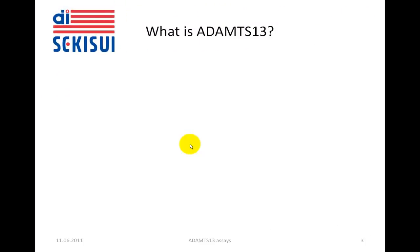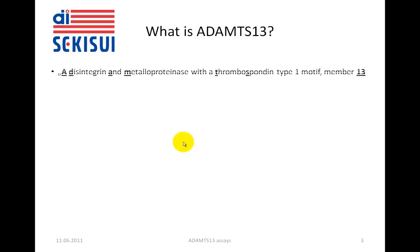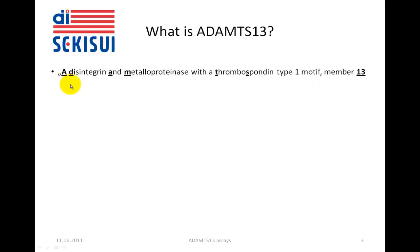What is ADAMTS-13? ADAMTS-13 is an enzyme, a proteinase. ADAMTS-13 belongs to a certain family that is defined by certain molecular structures. The name of the family is 'a disintegrin and metalloproteinase with a thrombospondin type 1 motif' and it is member 13 of this family. Basically, ADAMTS-13 is derived by taking certain letters from this complicated name and adding the number 13.